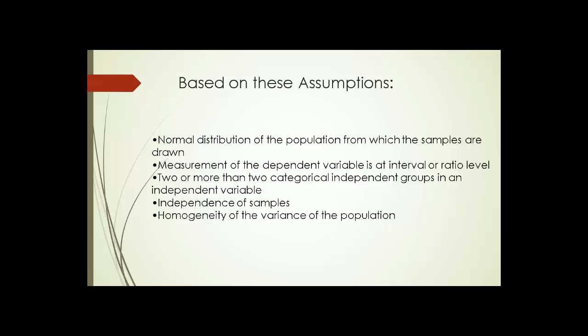Third, two or more than two categorical independent groups in an independent variable. Fourth, independence of samples. And fifth, homogeneity of the variance of the population.